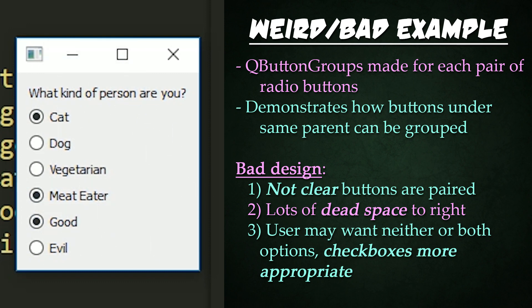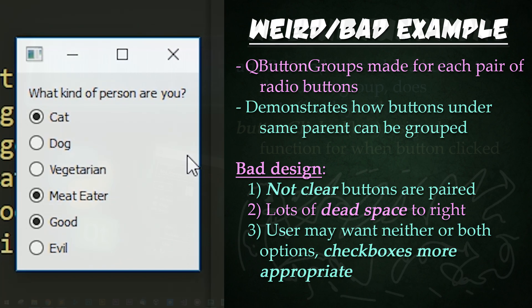So why is this terrible UI design? First off, it's not clear to the user that this stuff is in pairs. Next, the layout leaves a bunch of dead space over here on the right hand side. And finally, people can be neither or both of these things, so checkboxes would be more appropriate. I know personally that I am good and evil, so I should have that option.